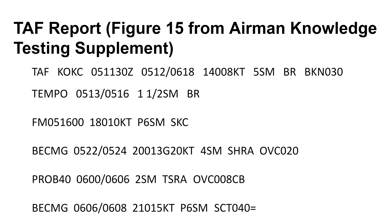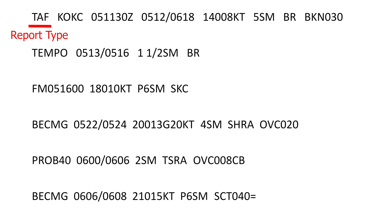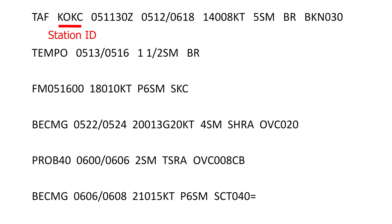As for TAF reports, they are very similar except that these reports provide multiple valid period dates and times along with probabilities for weather forecast conditions. Let's pick one TAF report from the Airman Knowledge Testing Supplement, Figure 15. First is the type of report, which is TAF — it could also be TAF AMD meaning an amended report. Next is KOKC, which is a station identifier. Then there is a date and time of the TAF forecast report in UTC or Zulu time — in this case on the 5th day of the month at 11:30 Zulu time.